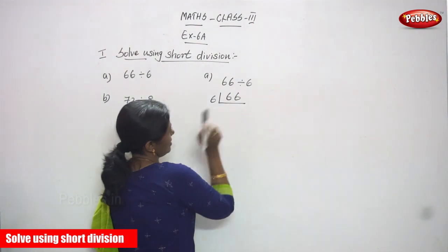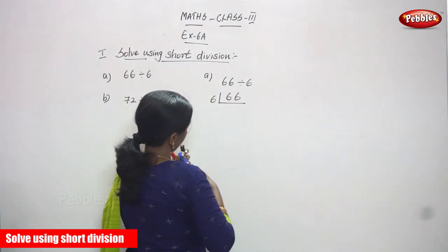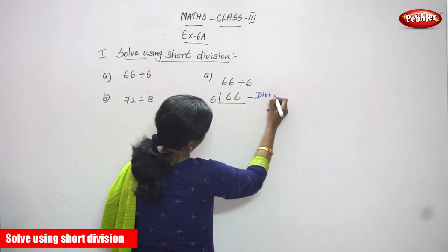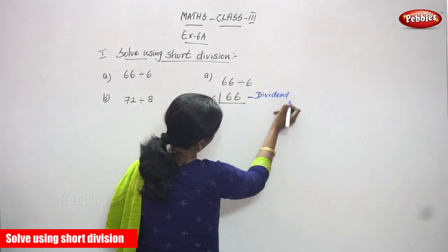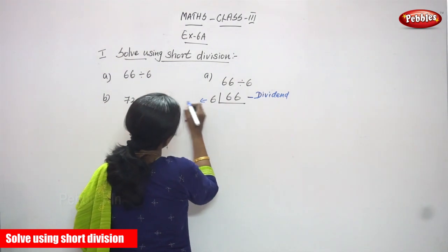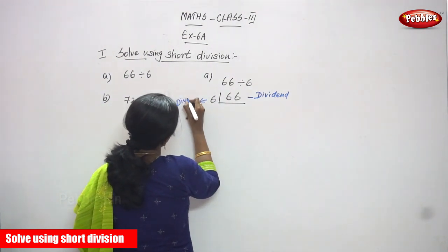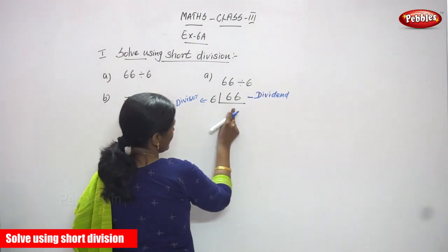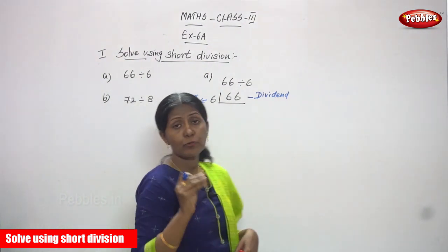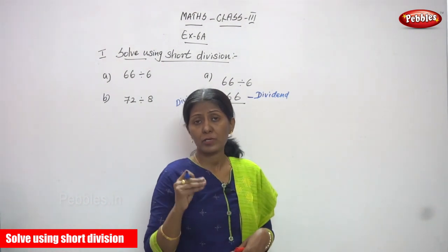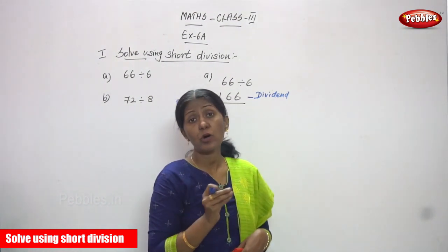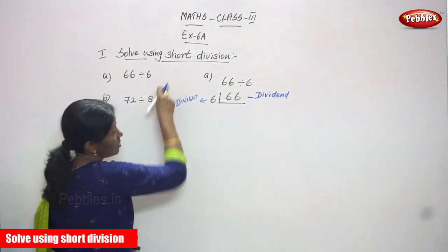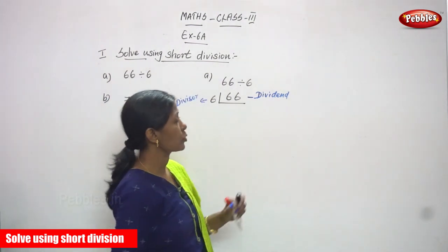66 is the dividend and 6 is the divisor. Now 66 is going to be divided by 6. We are going to use the short division method — it is not the long division method. Solve using the short division method.